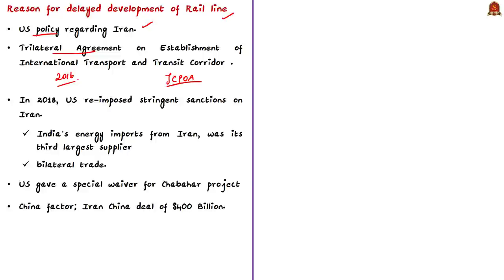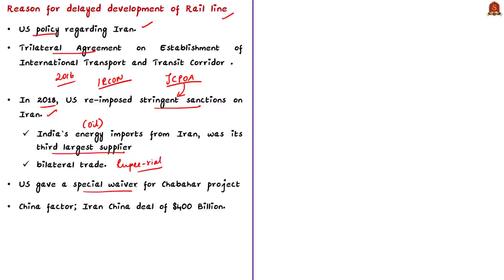The agreement also includes the port project and a railway line to be built and funded by IRCON for about $1.6 billion. In 2018, US President Donald Trump overturned the JCPOA and reimposed stringent sanctions on Iran. This meant India's energy imports from Iran — its third largest supplier — had to drop to zero. Bilateral trade, which depended on a rupee-rial exchange mechanism, also stopped. The United States gave Chabahar port and rail line a special waiver to India, but the sanctions made it very difficult for companies dealing with the US to participate in the project, bringing Indo-Iran infrastructure projects to a dead end again.